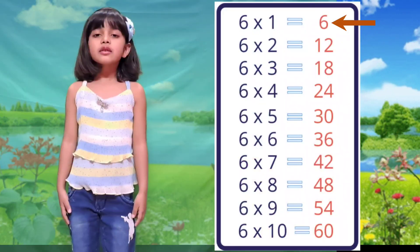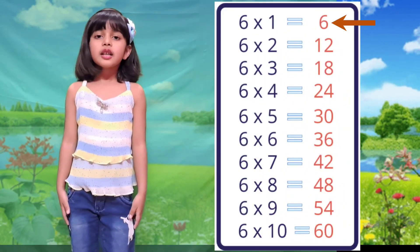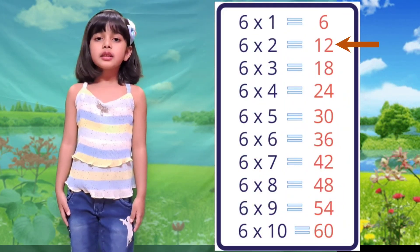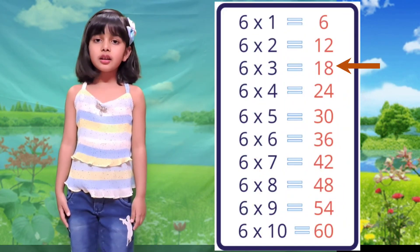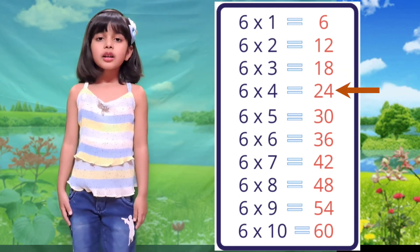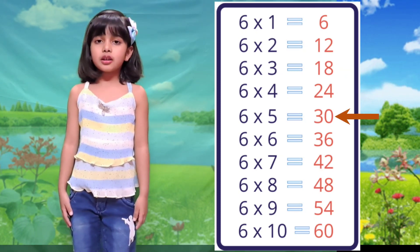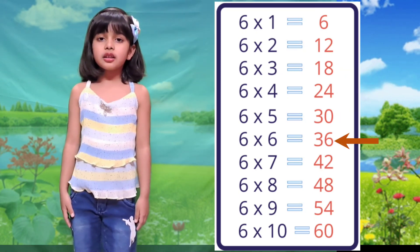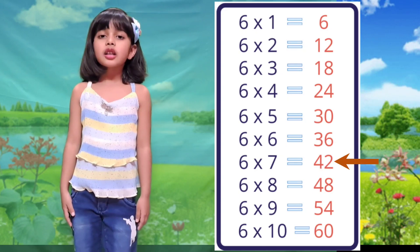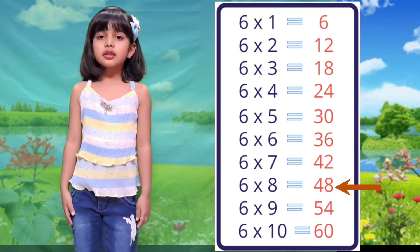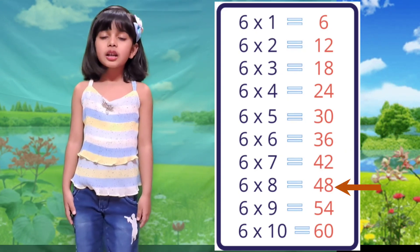Table of 6. 6×1 is 6, 6×2 is 12, 6×3 is 18, 6×4 is 24, 6×5 is 30, 6×6 is 36, 6×7 is 42, 6×8 is 48.